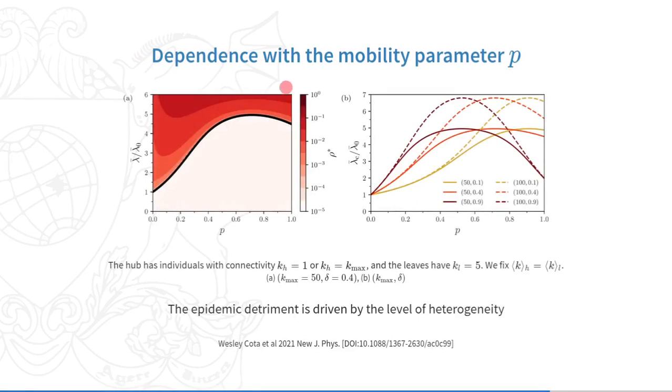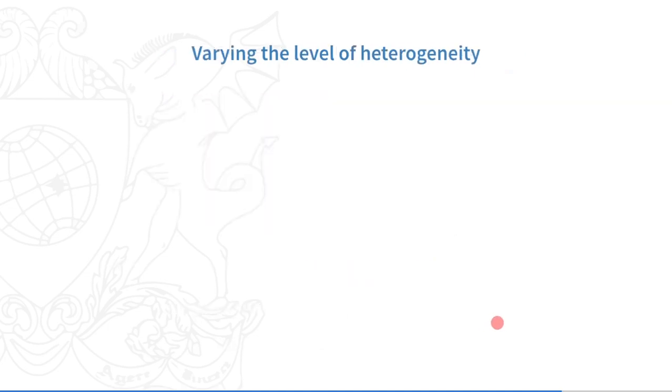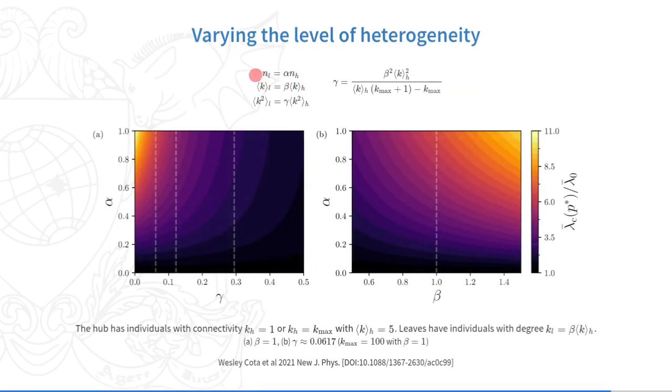We also studied the dependence with the mobility parameter p. The mobility patterns rule the position of the peak of the epidemic threshold, and its value depends only on the level of heterogeneity. To quantify these effects, we vary the level of heterogeneity of the number of individuals with alpha, the average connectivity with beta, and the second moment of connectivity with gamma.